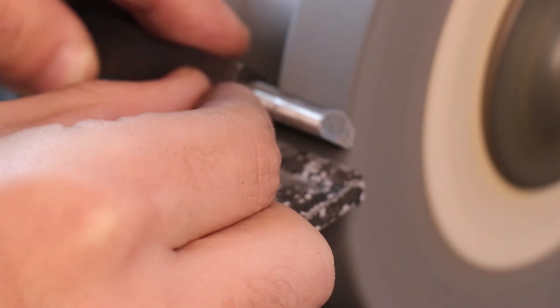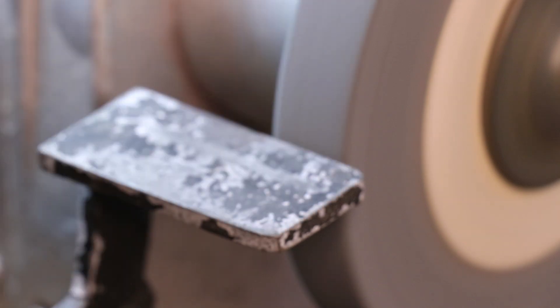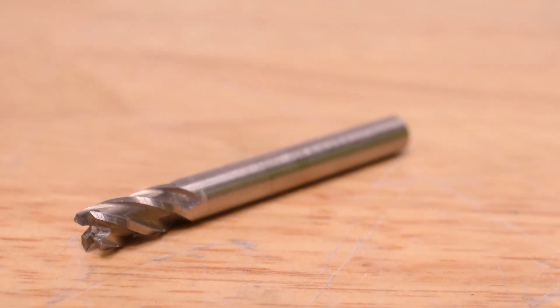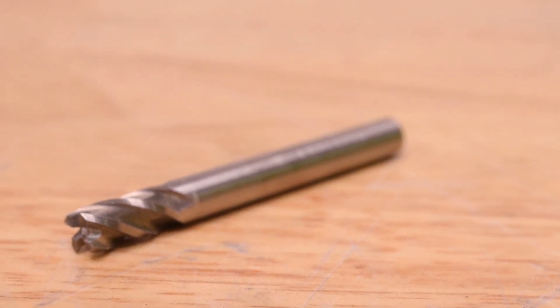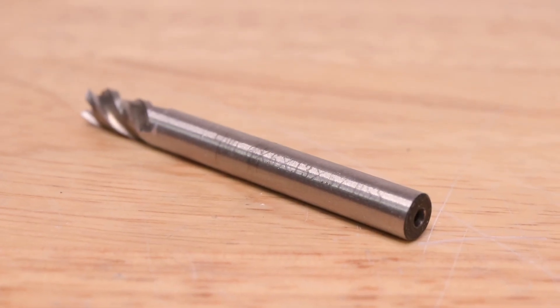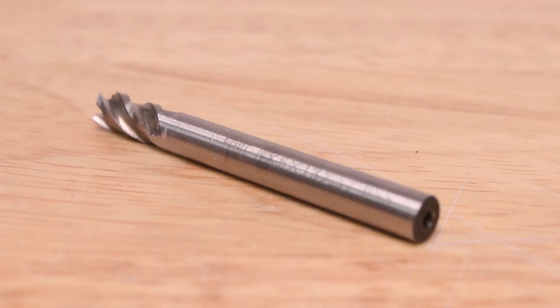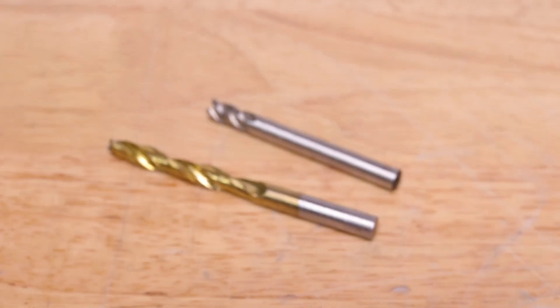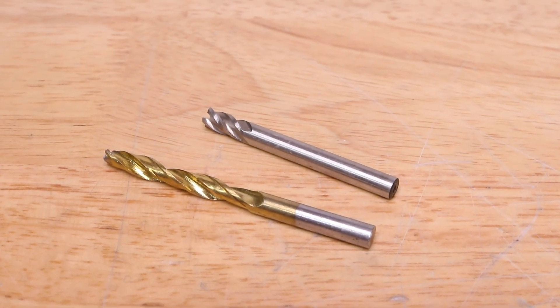Secondly, whilst twist drills will undoubtedly be the most common source of high-speed steel, end mills are a really great source of high-speed steel. Some will have a large amount of material in the shank compared to a typical jobber drill that you would get from the local hardware store.